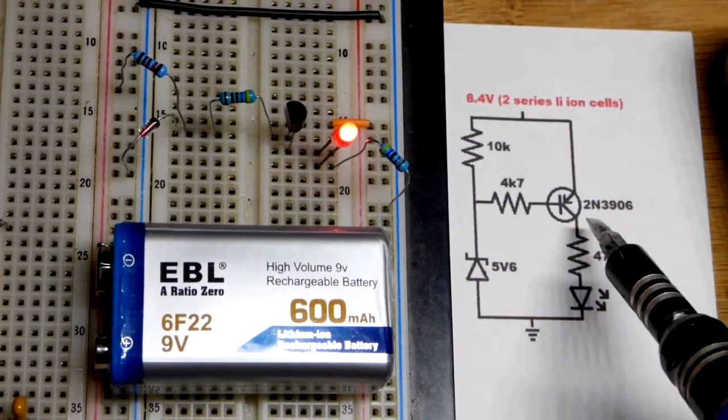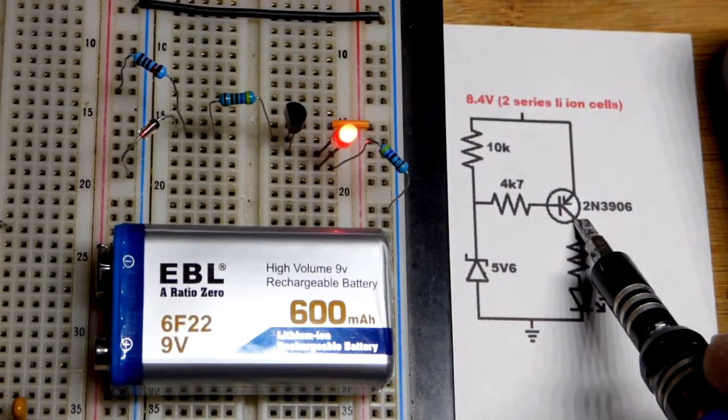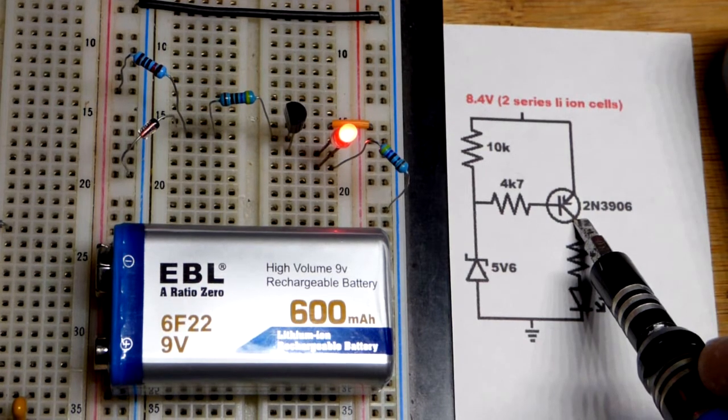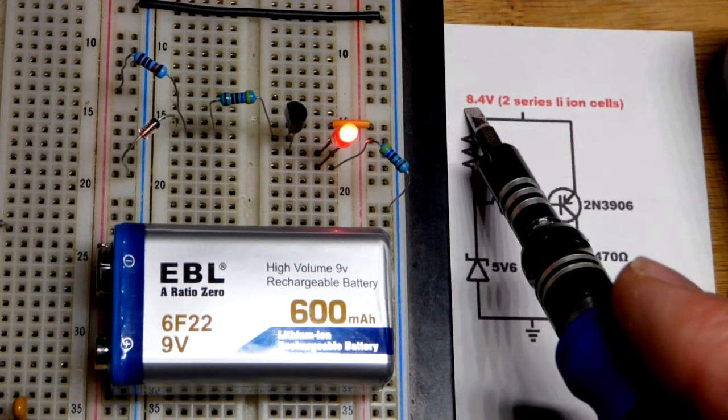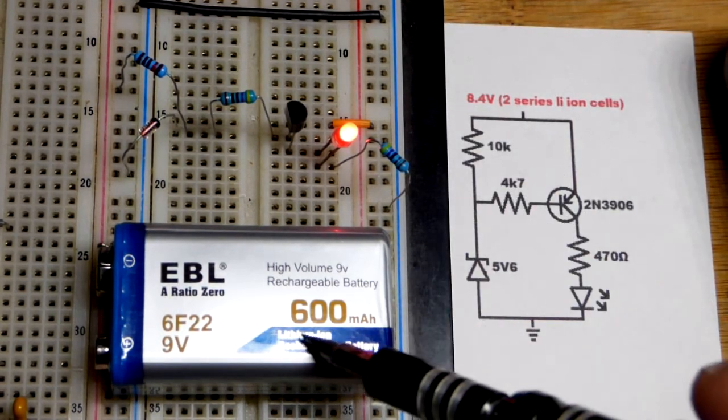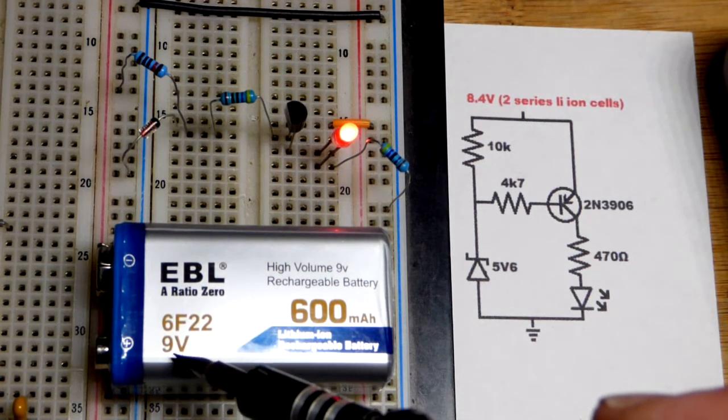So now in this video we're going to use a PNP bipolar junction transistor as a low voltage cutoff and we're going to base the voltages around the lithium ion battery, a two cell lithium ion battery.